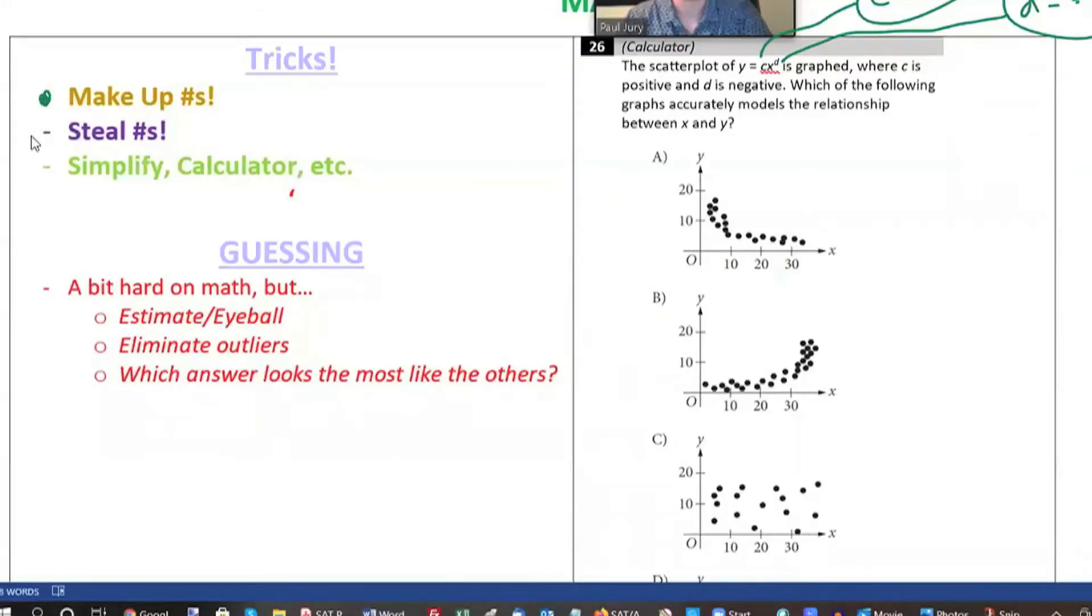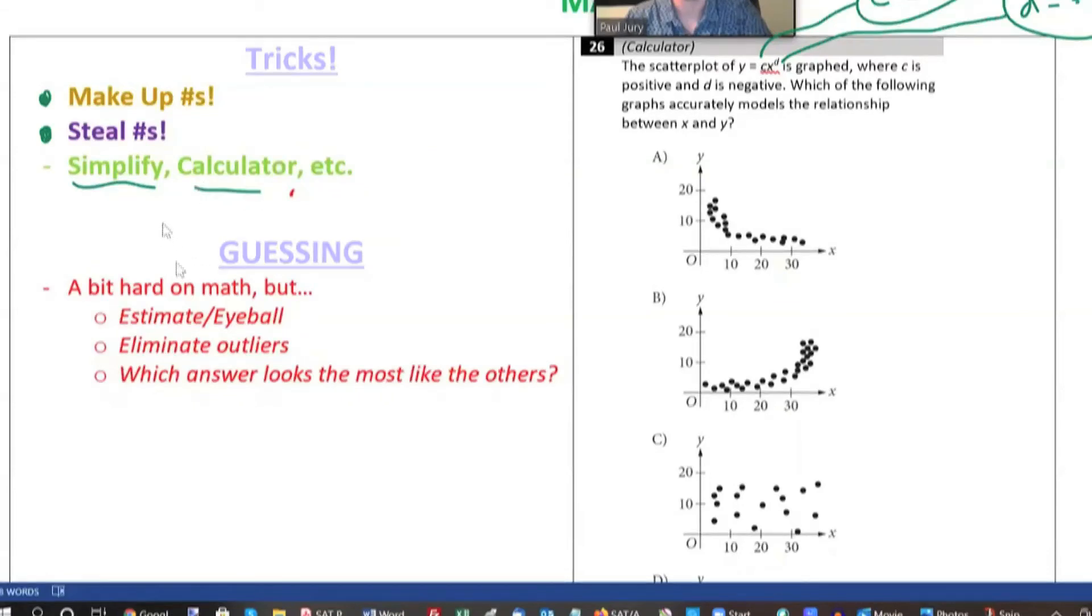Make up numbers if you see variables. If you can steal the numbers from someplace in the graph, chunk those back in. And, you know, simplify things. That's a little bit like what your math teacher would say, but always look for opportunities to cancel or change things into more friendly forms. Or, you know, use your calculator if you can.